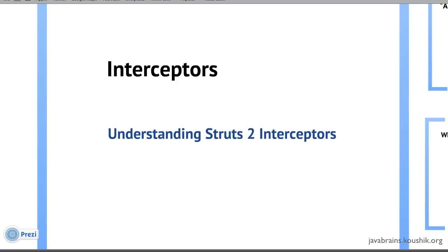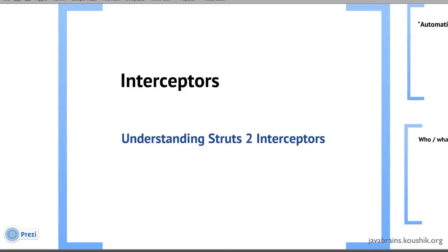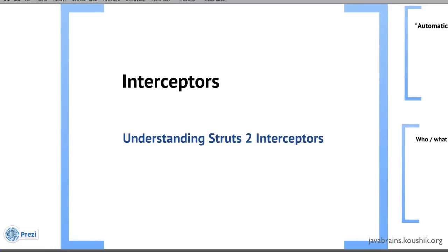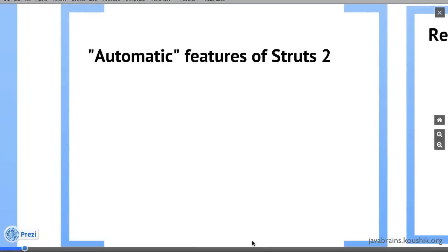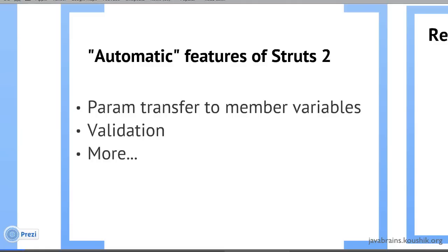A lot of things happen automatically — the out-of-the-box features, so to speak. For example, one of them is transferring parameters from your Struts form to your member variables in the action class. Another thing we saw was validation — we didn't really have to make calls to validation; there was already a validation framework in place. You just had to supply the validation logic. There's a lot of other stuff we haven't even covered yet, but all these features come out of the box in Struts 2.